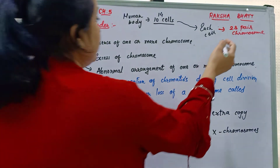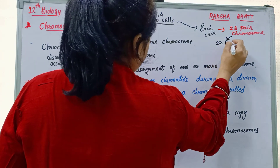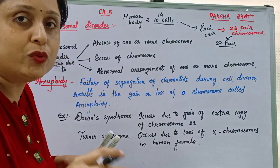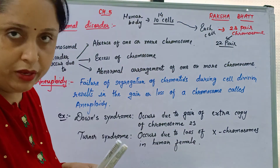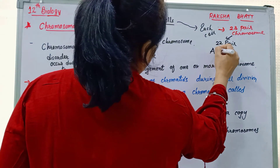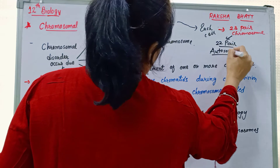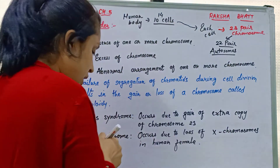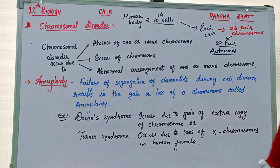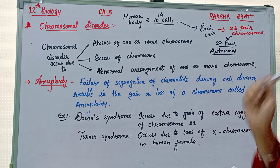Out of these 23 pairs, 22 pairs are similar in both male and female. They are known as autosomes.